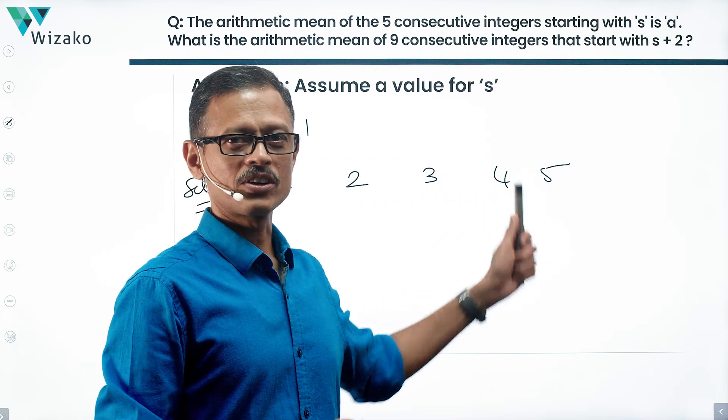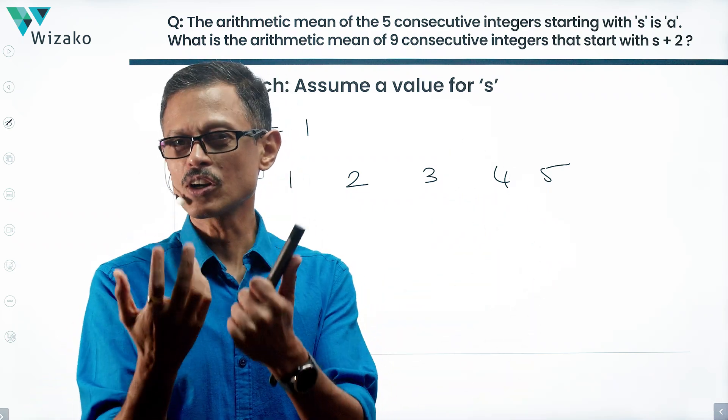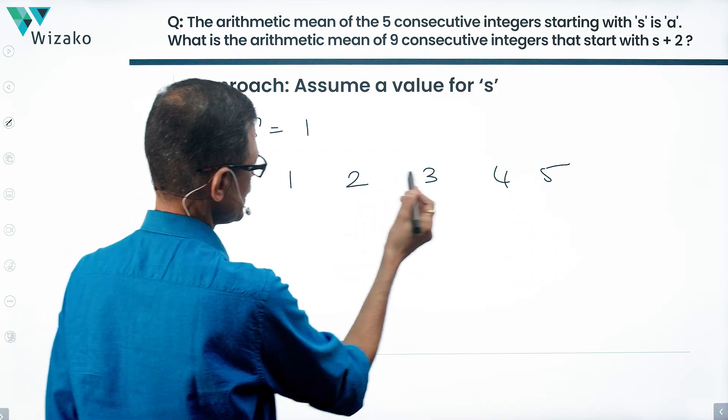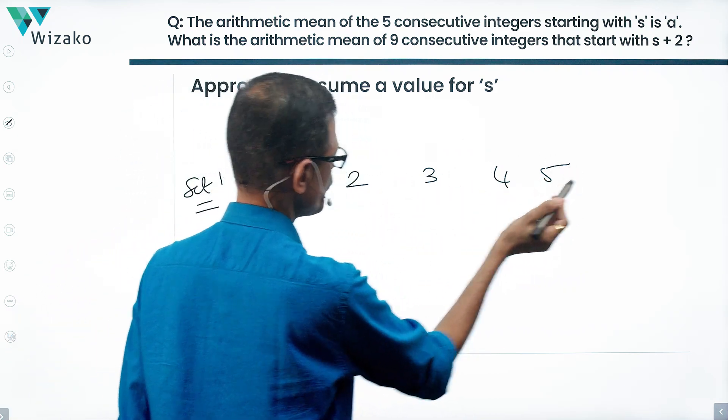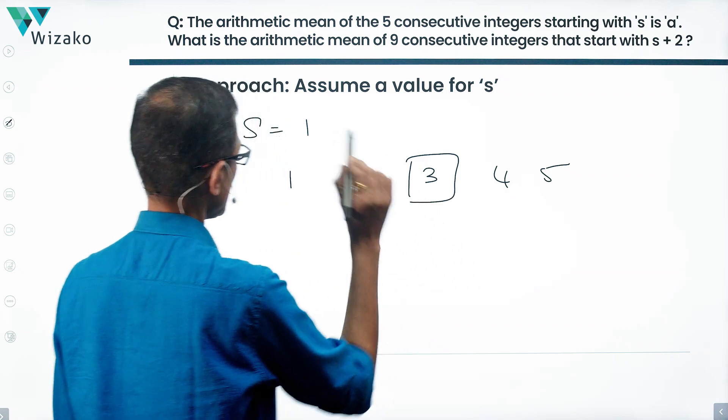These are all in an arithmetic progression, so the middle number is the arithmetic mean. But even if you hadn't known that, 1 plus 2 is 3, plus 3 is 6, plus 4 is 10, plus 5 is 15. 15 divided by 5 equals 3. So this is our average.